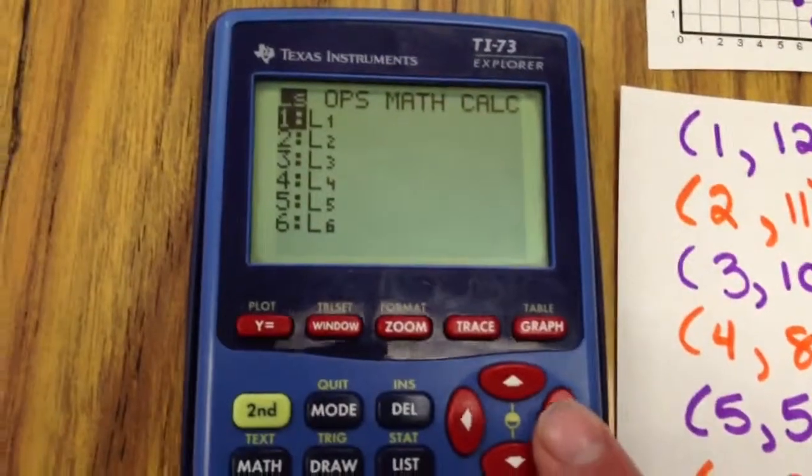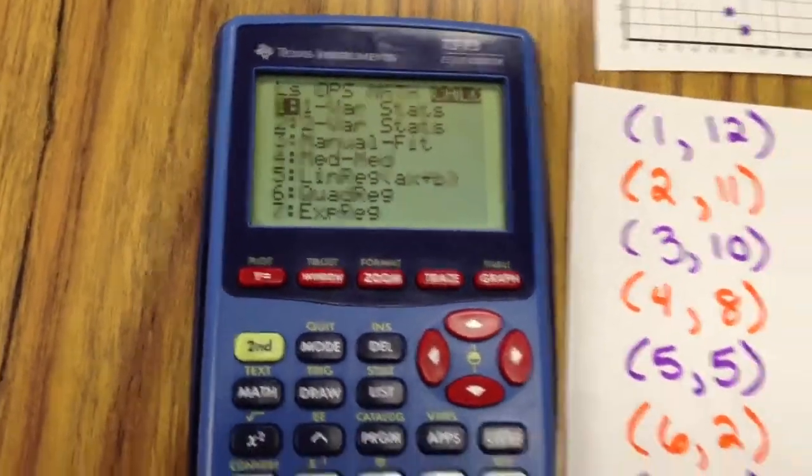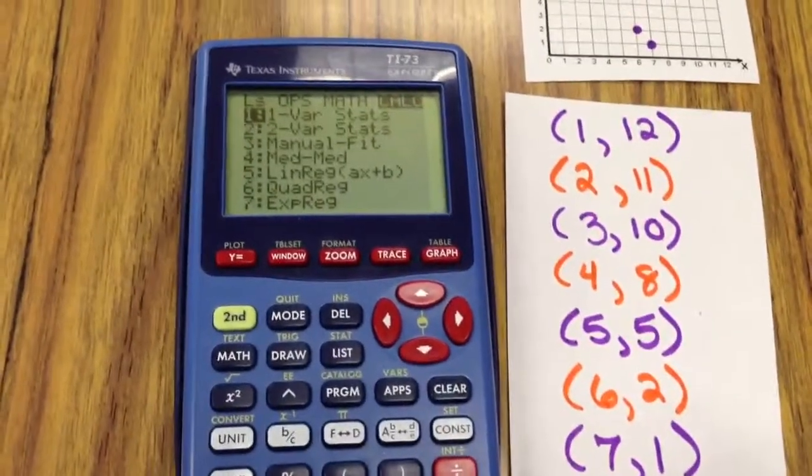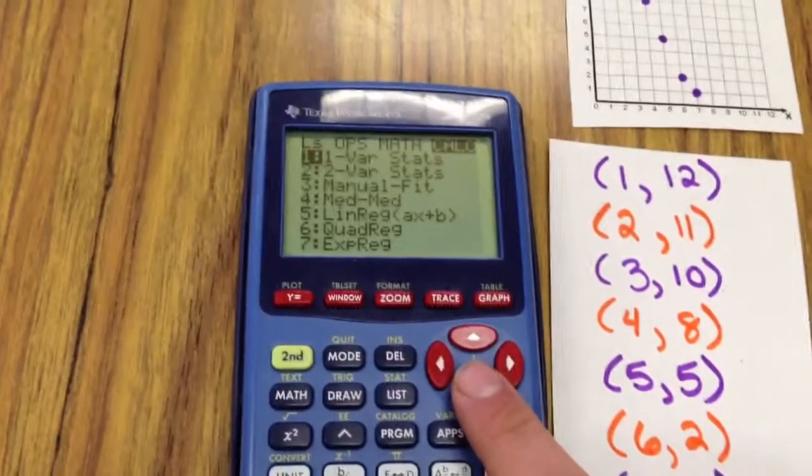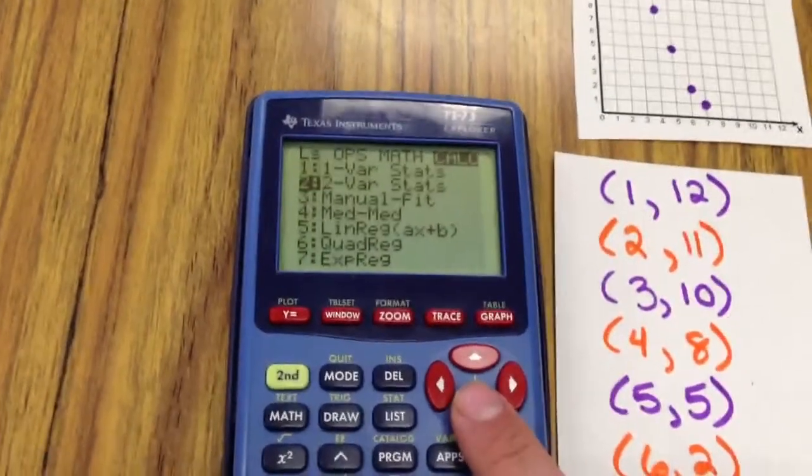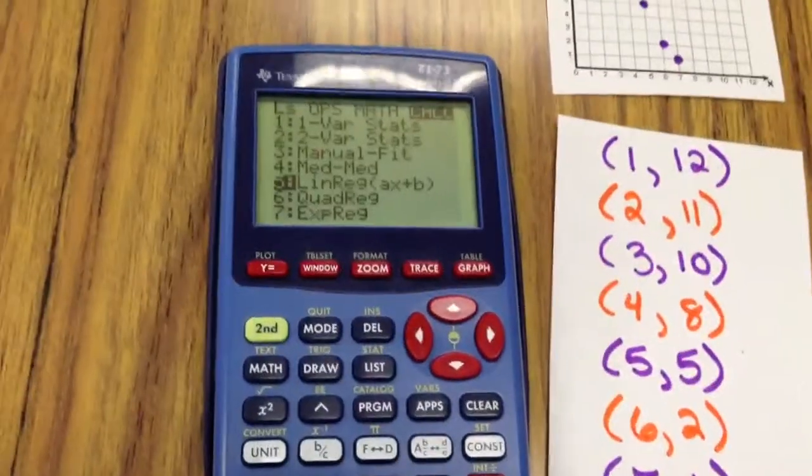Look at those options up top. I'm going to hit right until I go to calc. Now what I told you before, the process that we're going to use is linear regression. So I'm going to go down to 5, 2, 3, 4, 5. And I'm going to hit enter.